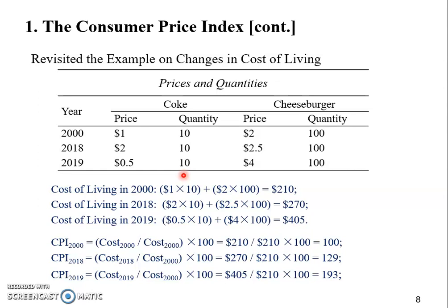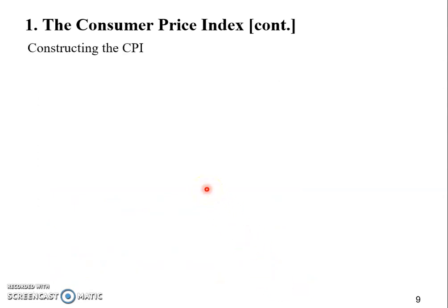The specific number used as a quantity — for coke or cheeseburger — matters because the quantity represents how important that good is in our fixed market basket. Previously we used 50; now it's 10, meaning coke becomes less important when we figure out the price change in this fixed market basket. The intuition is: when we use 10, people spend much less money on coke, so the change in coke price should have less influence upon our CPI.